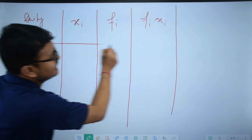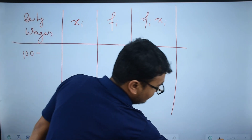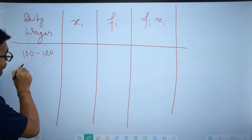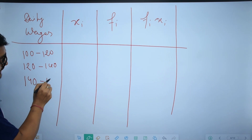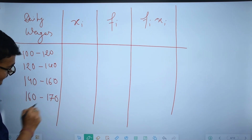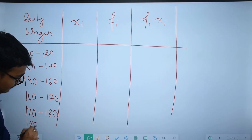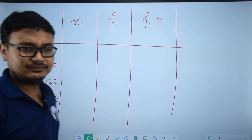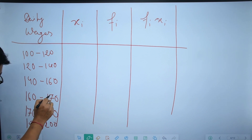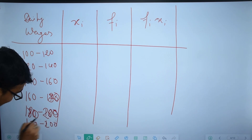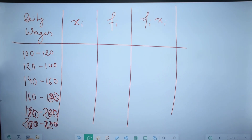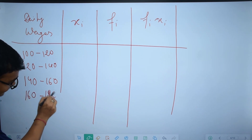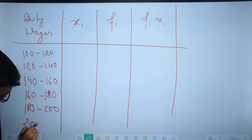The daily wages class intervals are: 100–120, 120–140, 140–160, 160–180, 180–200, 200–220, and 220–240. These are continuous class intervals.